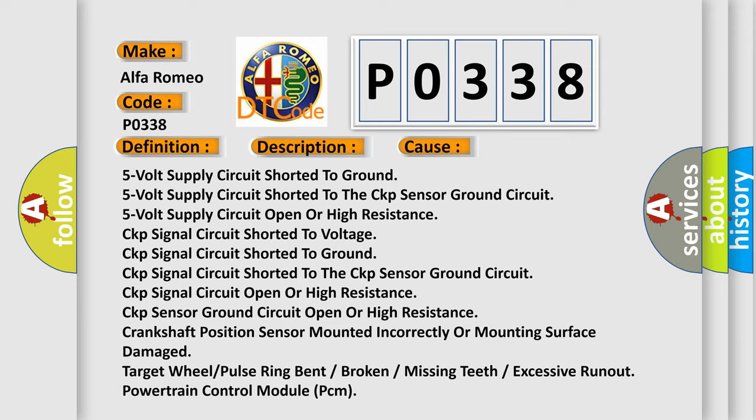This diagnostic error occurs most often in these cases: 5-volt supply circuit shorted to ground, 5-volt supply circuit shorted to the CKP sensor, 5-volt supply circuit open or high resistance, CKP signal circuit shorted to voltage, CKP signal circuit shorted to ground, CKP signal circuit shorted to the CKP sensor ground circuit, CKP signal circuit open or high resistance.